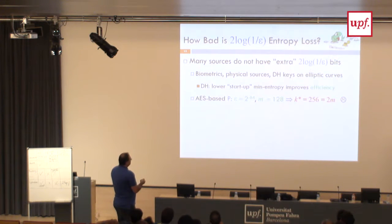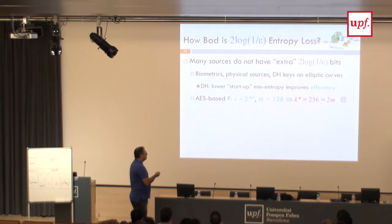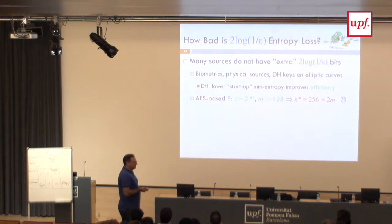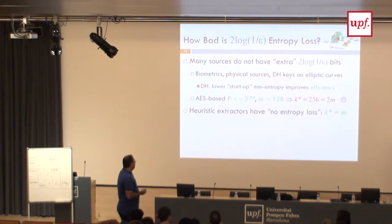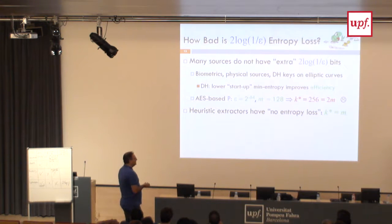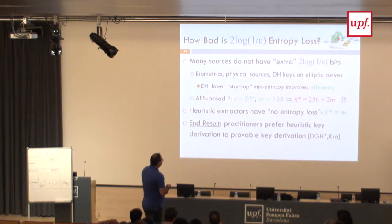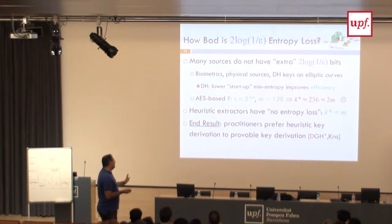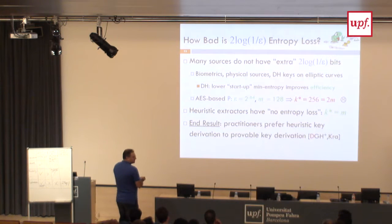For example: if I want 2-to-the-minus-64 security and want to derive a key for AES (128-bit key length), the leftover hash lemma says I need 256 bits of entropy — roughly double. Heuristic extractors argue you need 128, which in practice could be a big deal if I assume my biometric thing has 256 bits of entropy versus 128. I would guess practitioners might prefer heuristic key derivation to provable key derivation, and we would like to tell them they shouldn't.